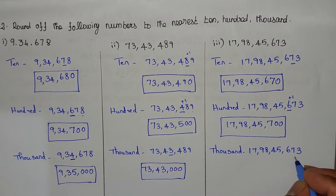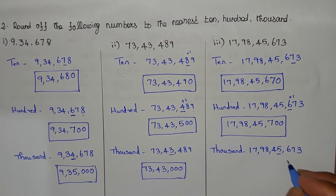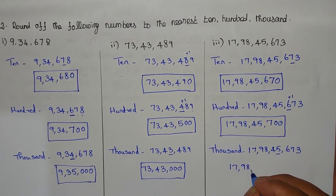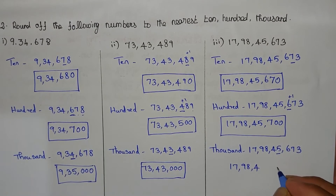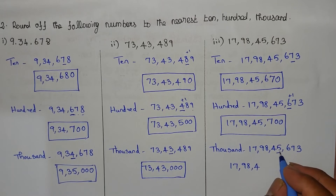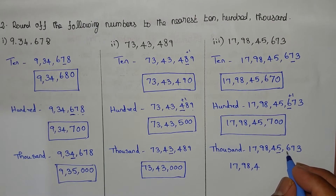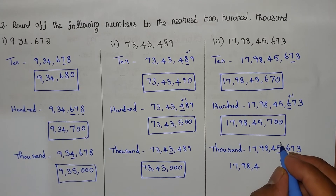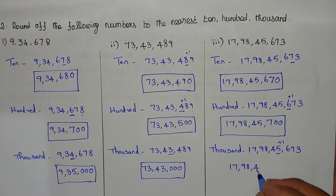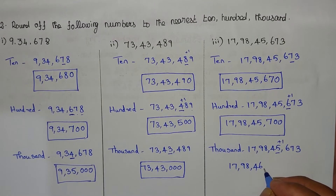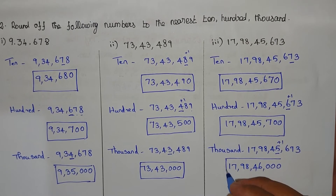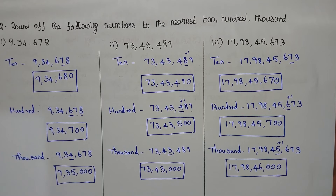For the 1000s place, the right-hand side digits are replaced with 0. This is the answer for this question.